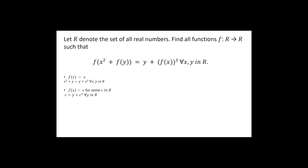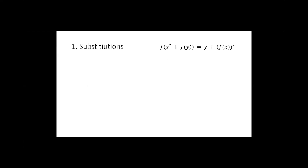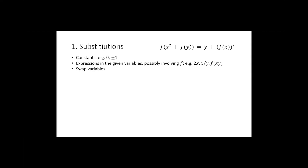The most basic way to approach any functional equation is just by substituting. You can substitute constants — for example, zero or minus one — you can substitute expressions in the given variables, so in our case x and y, possibly involving f, such as 2x or f(x) times y. You can also, for example, swap the variables.